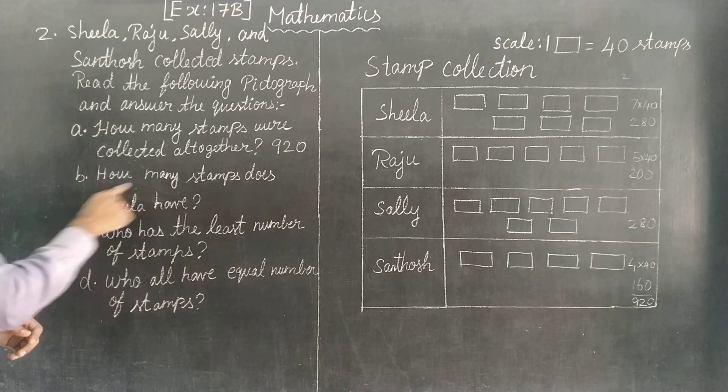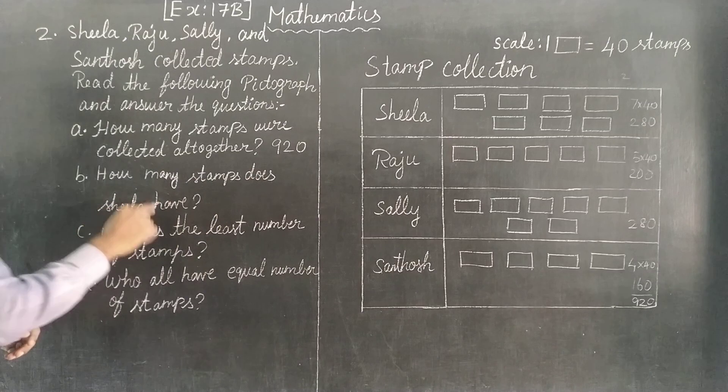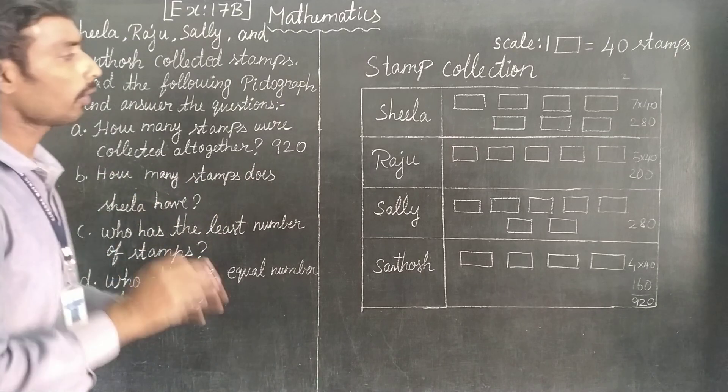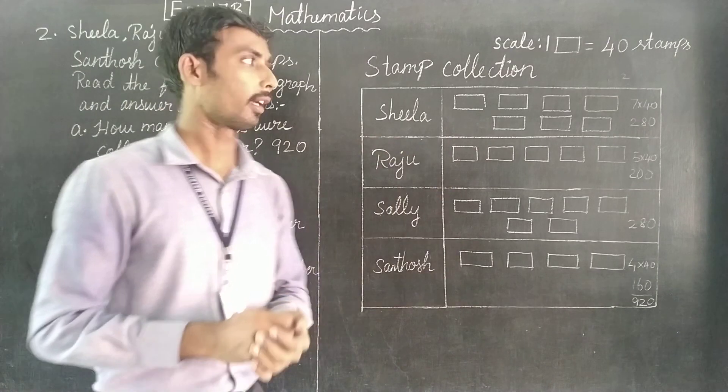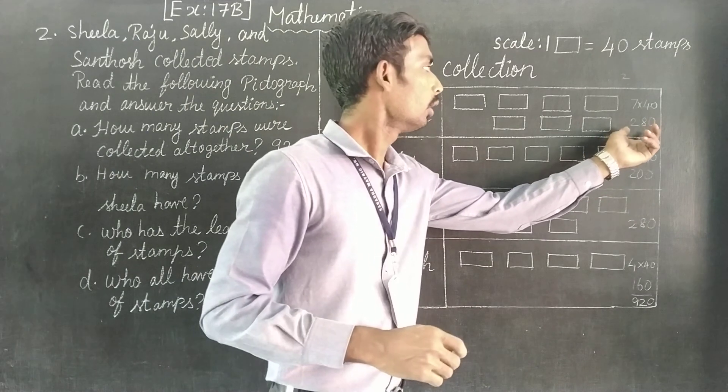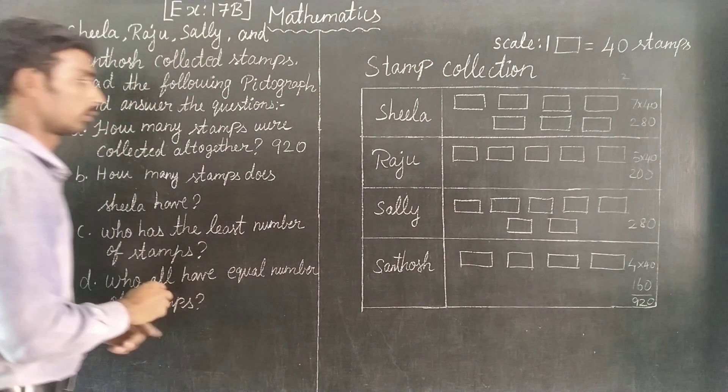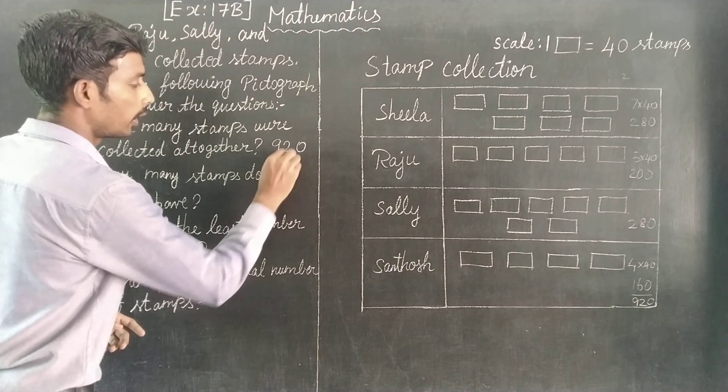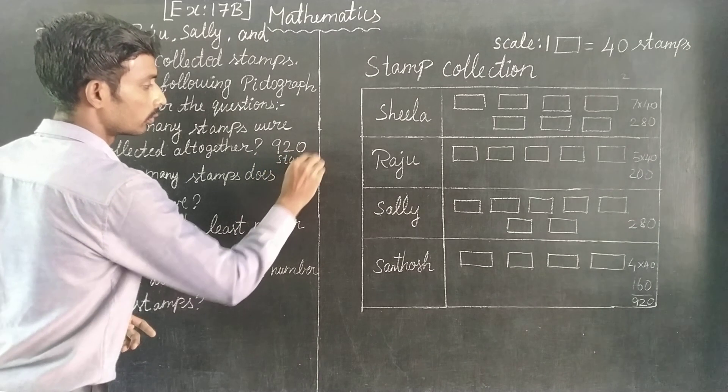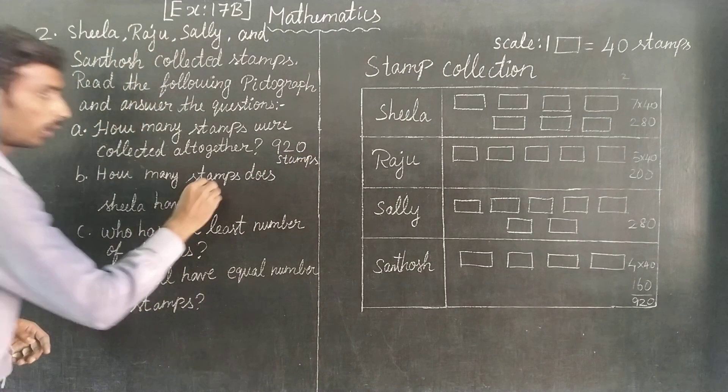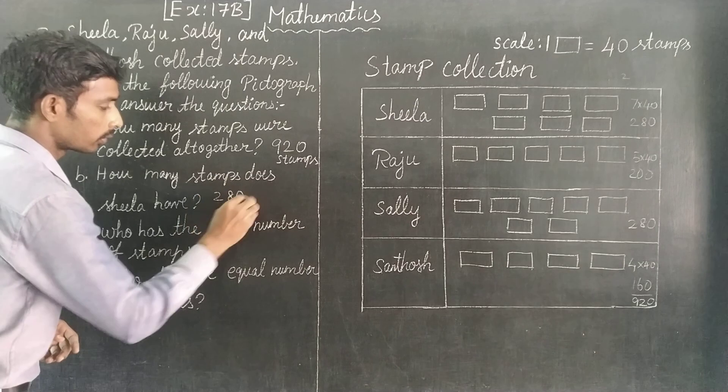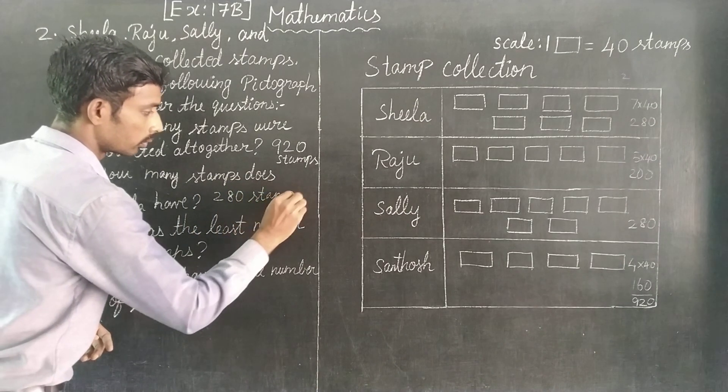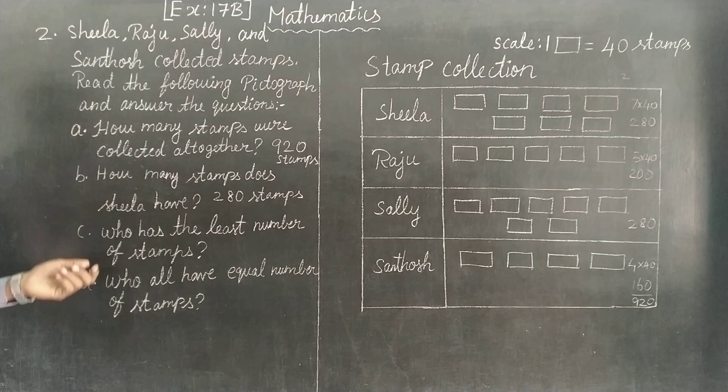In my next step, how many stamps does Sheela have? Sheela has 280 stamps. So the total was 940 stamps.